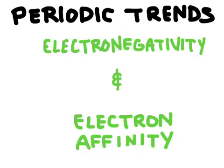In this video we're going to talk about electronegativity and electron affinity. We'll talk about what those two things are and then we'll talk about how we can compare elements to each other based on these two things in a periodic trend.